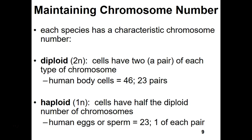We're going to skip over the information about cancer cells and go right to section 5.3 on page 84, looking at what mitosis is and how chromosomes work. When DNA is relaxed, it's called chromatin; when it condenses, it's called a chromosome.